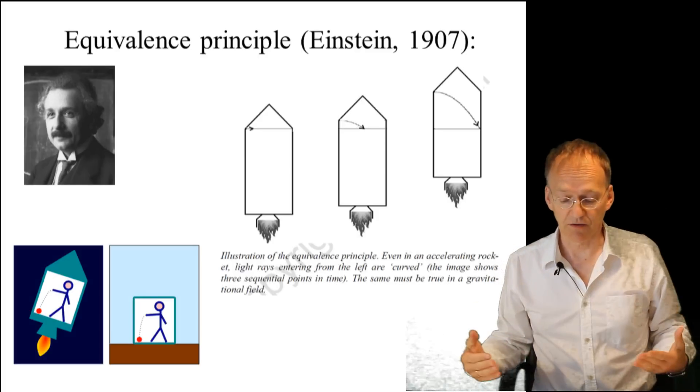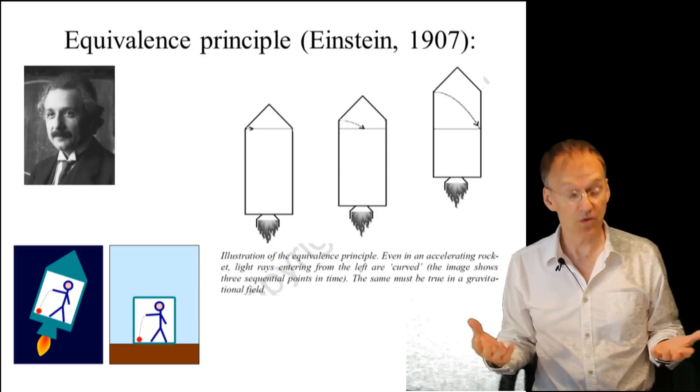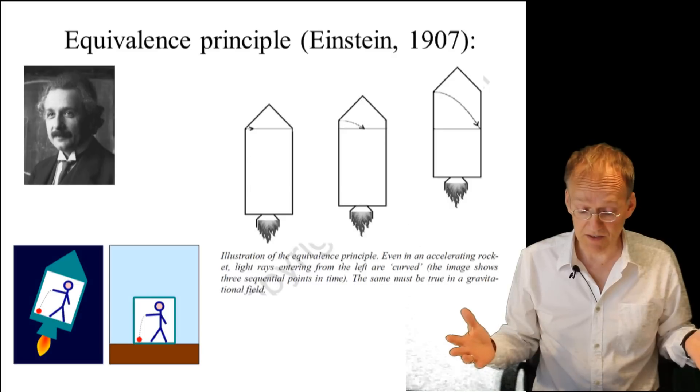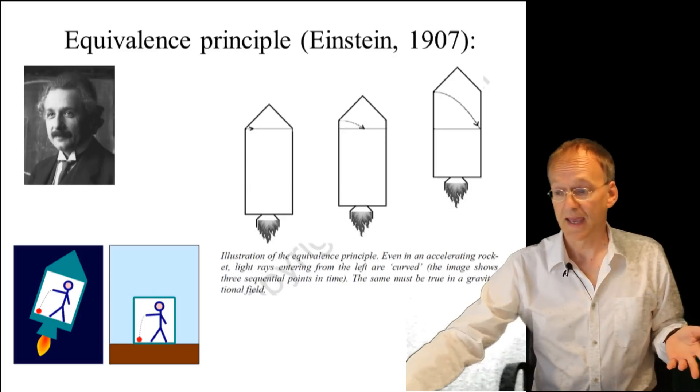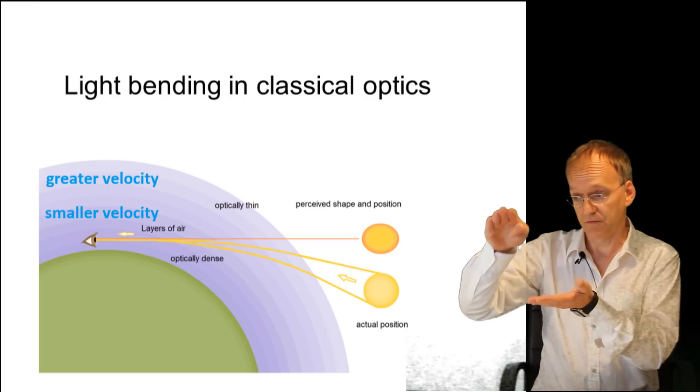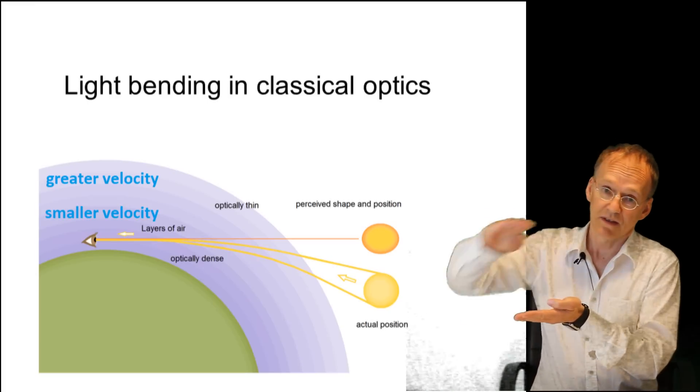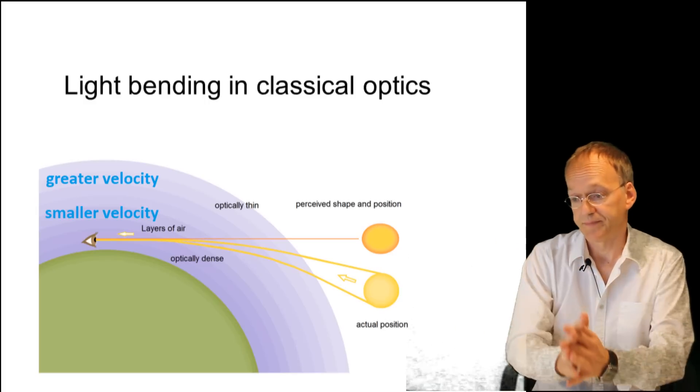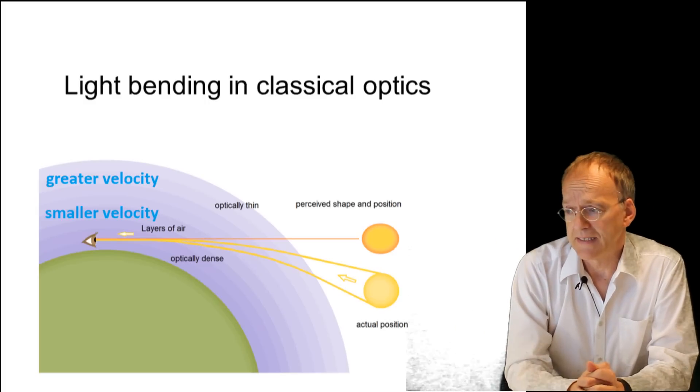The most simple explanation was variable speed of light, as in classical optics. If there is a difference in the speed of light, your light ray is curved automatically.